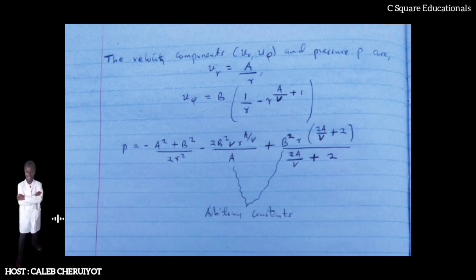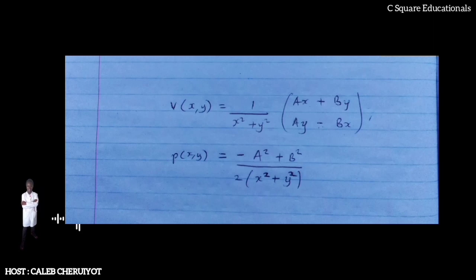In Cartesian coordinates when the viscosity is zero, ν = 0, that is, the velocity components V(x,y) and pressure P(x,y) are shown.